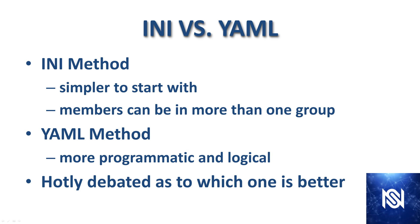There are two methods: the INI method and the YAML method. The INI method is a little bit simpler to start with, and it's the method used in the previous videos in this series. A distinguishing characteristic is that members can be in more than one group, so if you need that, the INI method is probably what you want. However, a lot of people prefer the YAML method because it's more programmatic and logical, and within the Ansible community it's hotly debated as to which one is better.